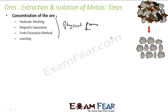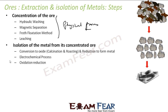Concentration is a physical process where we take advantage of the difference in physical properties between the metal and the unwanted particles. The next step is the isolation of metal from its concentrated ore, where we produce impure metal.